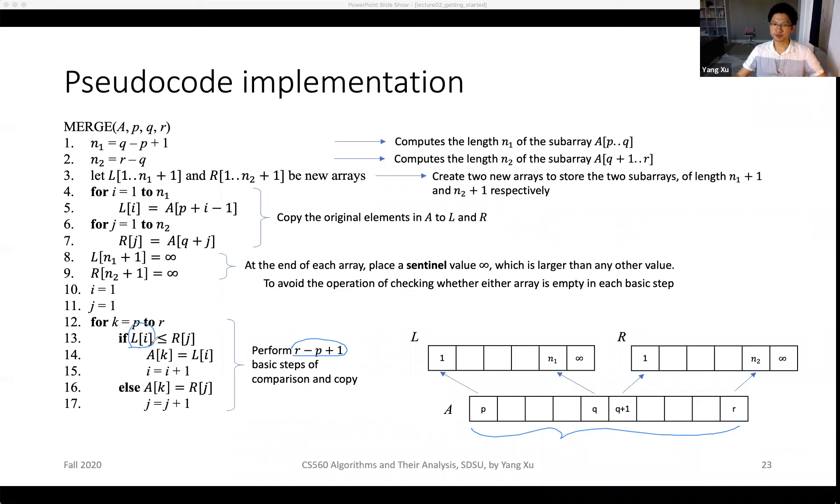Then we will increment the counter in that left pile. If it is the other way, if R has a smaller value, then we copy the element in R back to A and then we increment the counter in R. That is a straightforward design of the merge step.